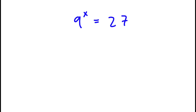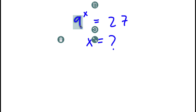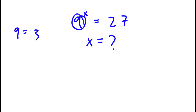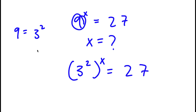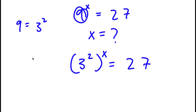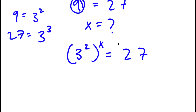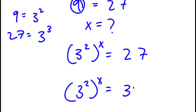In this problem, I have 9 to the power of x equals 27, and I want to find the value of x. I'll rewrite 9 as 3 squared, so I have 3 squared to the power of x equals 27. Since 27 equals 9 times 3, it equals 3 to the power of 3. So now I have 3 to the power of 2 to the power of x equals 3 to the power of 3.